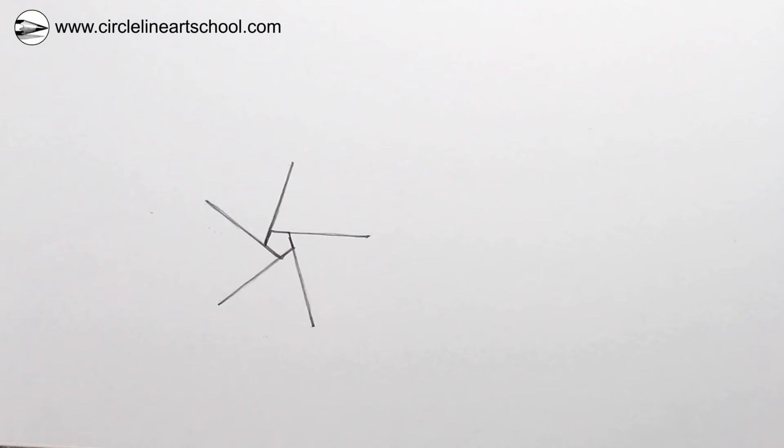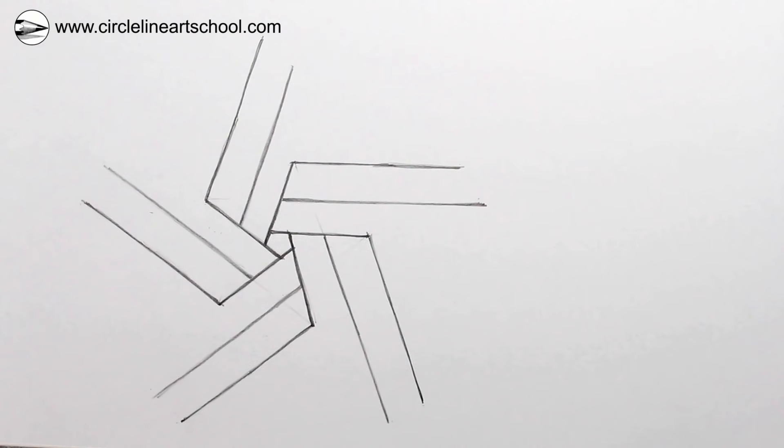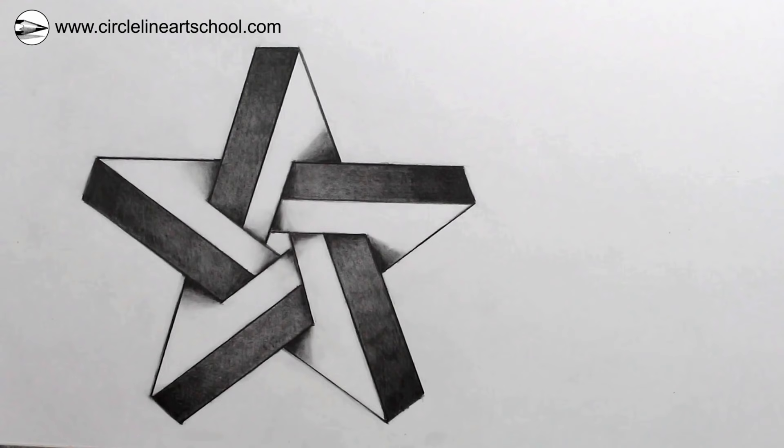Hi, Tom here with this week's Circle Line Art School drawing challenge to draw the impossible star step by step. This star is impossible in the sense that it couldn't exist in three dimensions, but we can draw it in two dimensions.